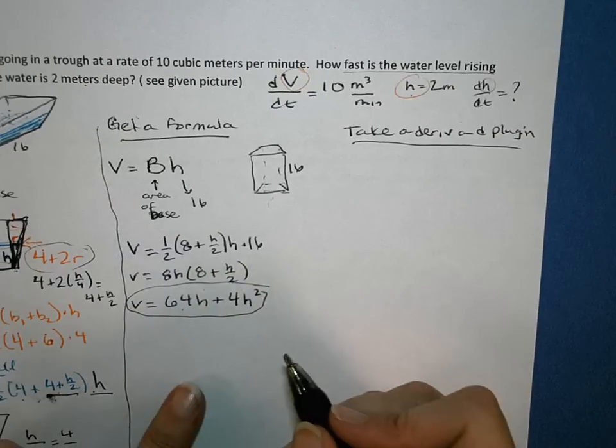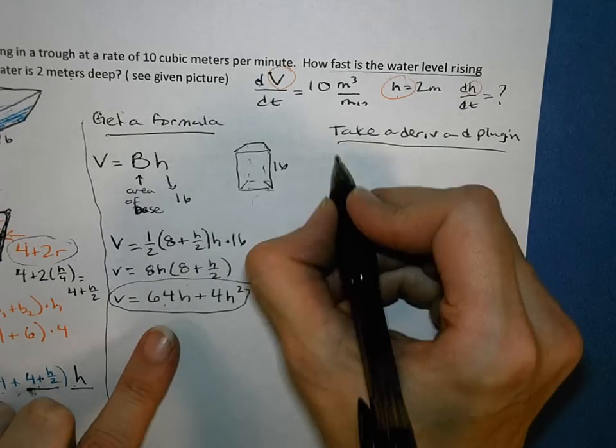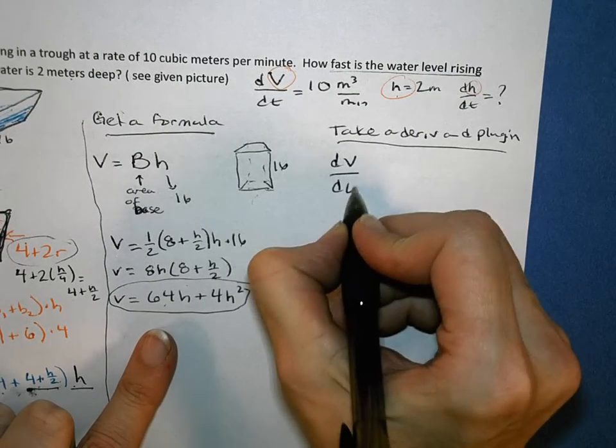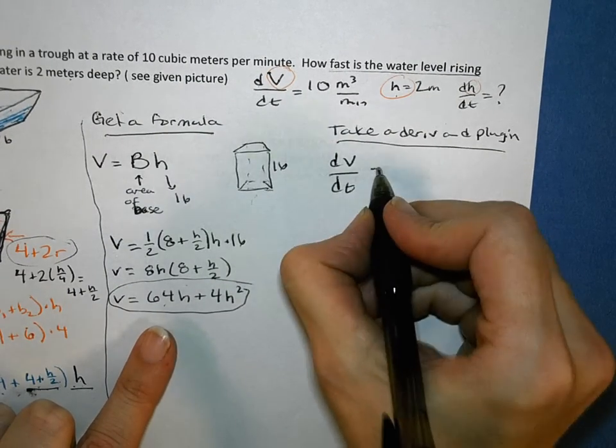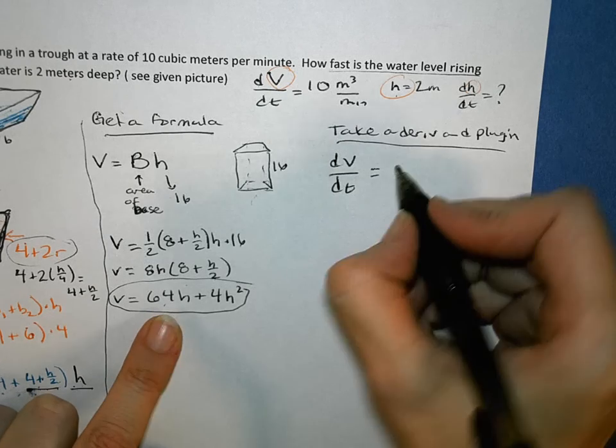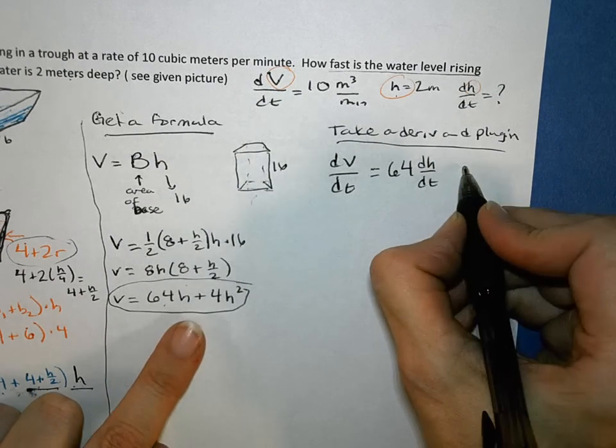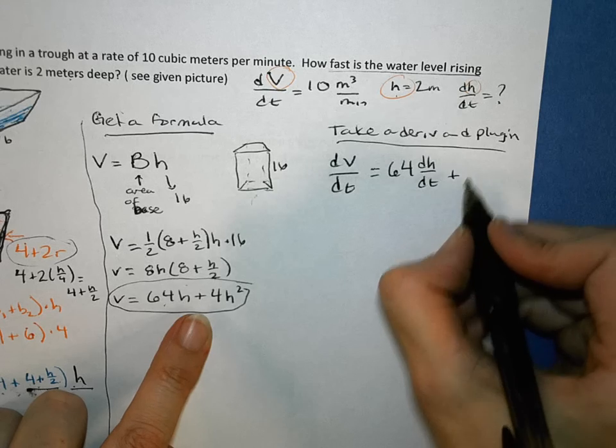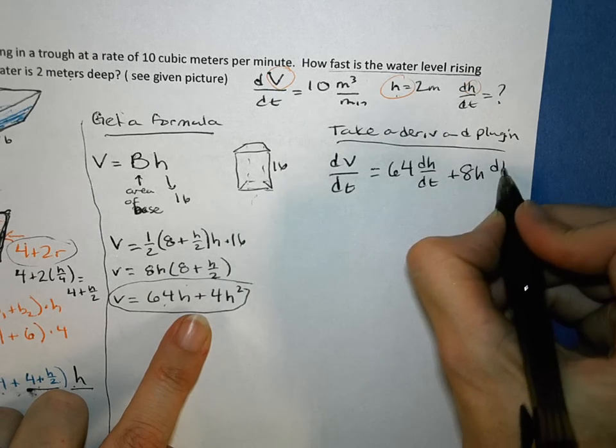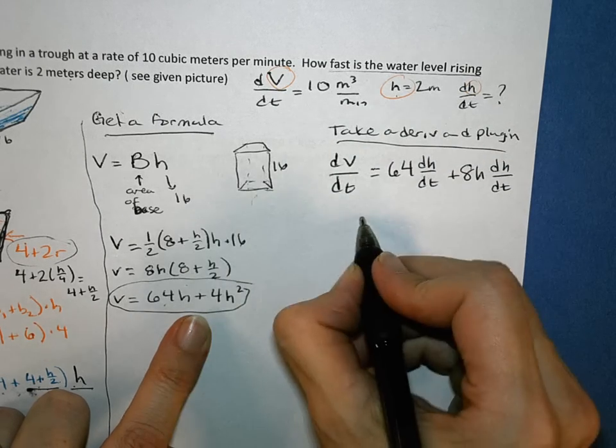So we're going to take the derivative of this volume formula. And that will give me dV/dt, because we're taking the derivative with respect to time. And the derivative of 64H is 64 dh/dt, and the derivative of 4H squared is 8H dh/dt.